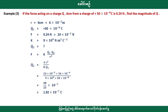If the force acting on a charge is 60 N, with plus 50 × 10⁻⁸, then 0.24 Newton equals F. Find the magnitude: the magnitude equals zero — 6 and 2 equals 1 minus 2. F is equal to 0, if r is equal to 0.